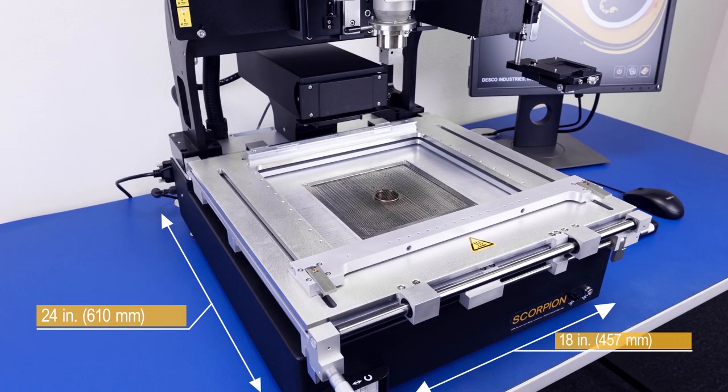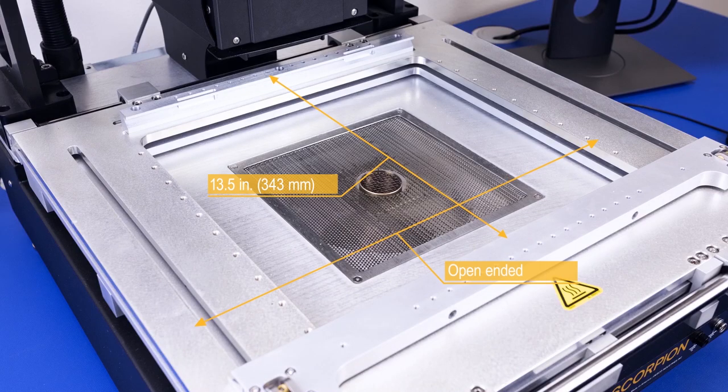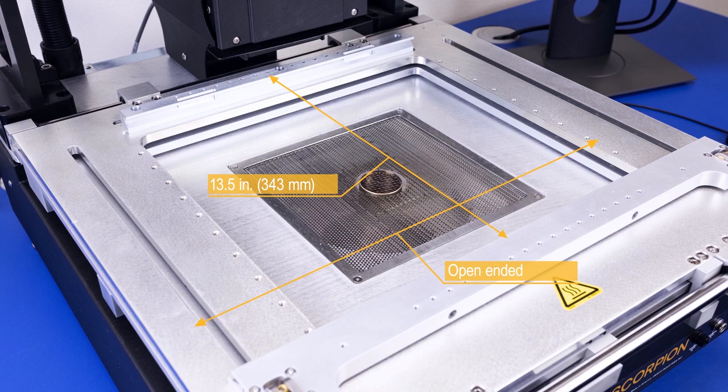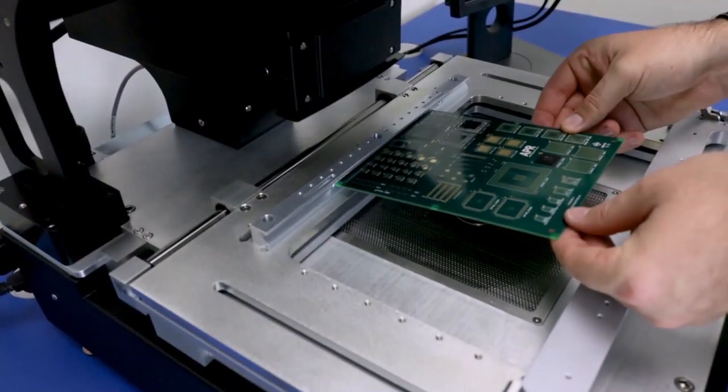The Scorpion is self-contained and has a compact footprint for benchtop use. It features a 13.5 inch open-ended printed circuit board holder capable of holding multiple board sizes.